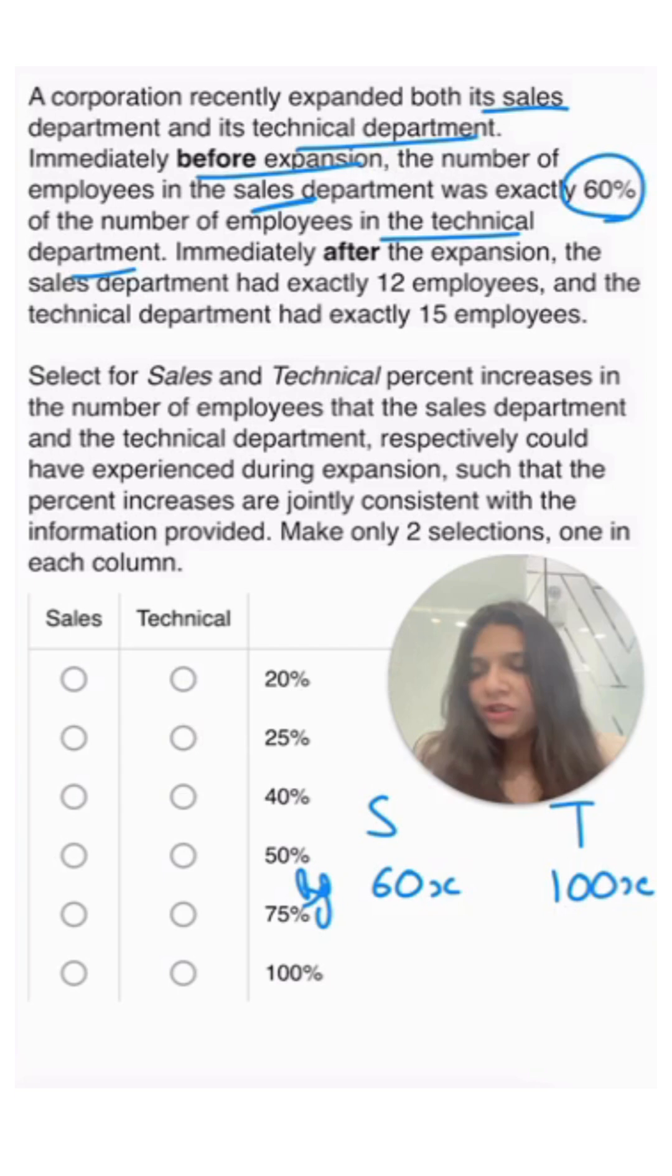Immediately after the expansion, the sales department had exactly 12 employees and the technical department had exactly 15 employees. So this is talking about what is thereafter.